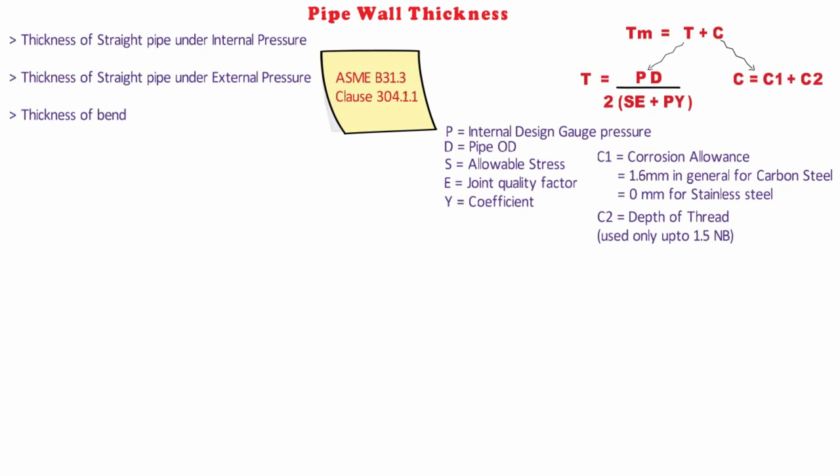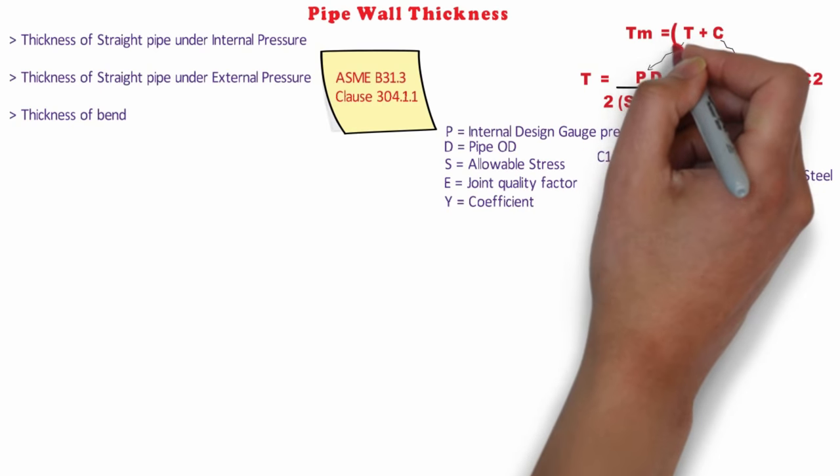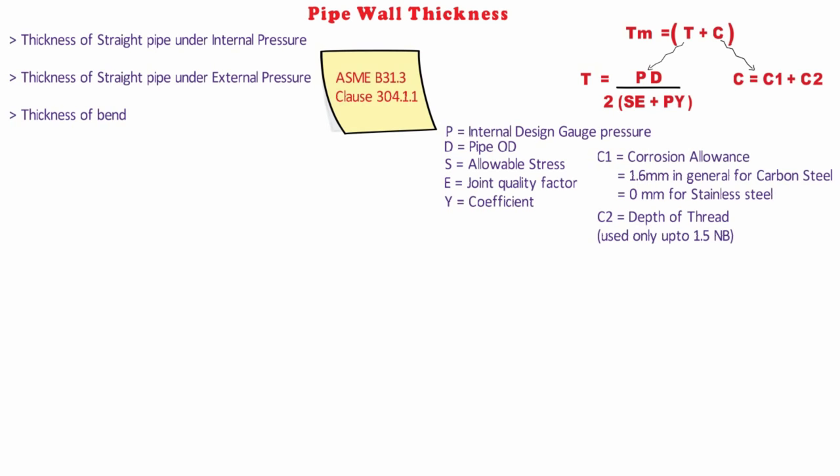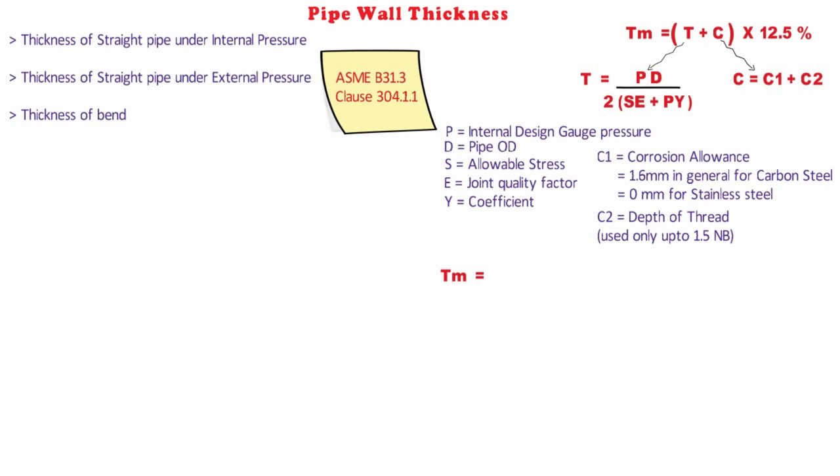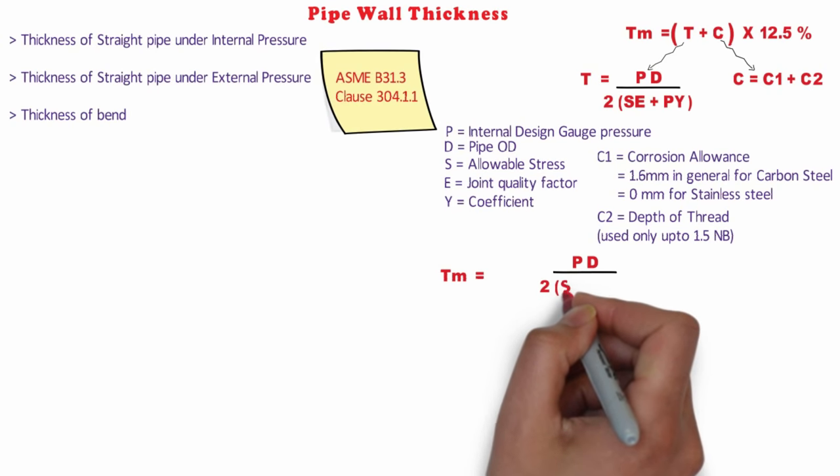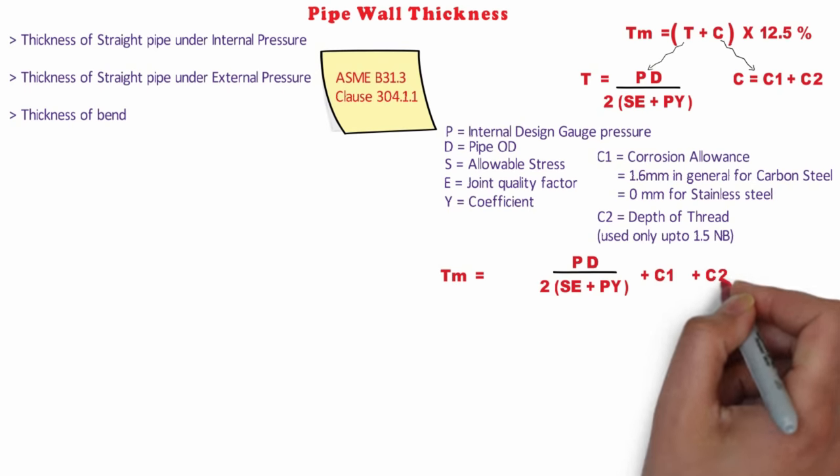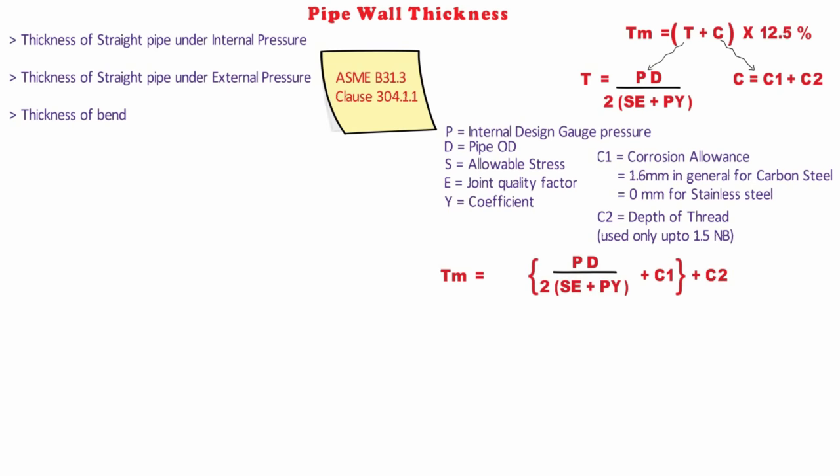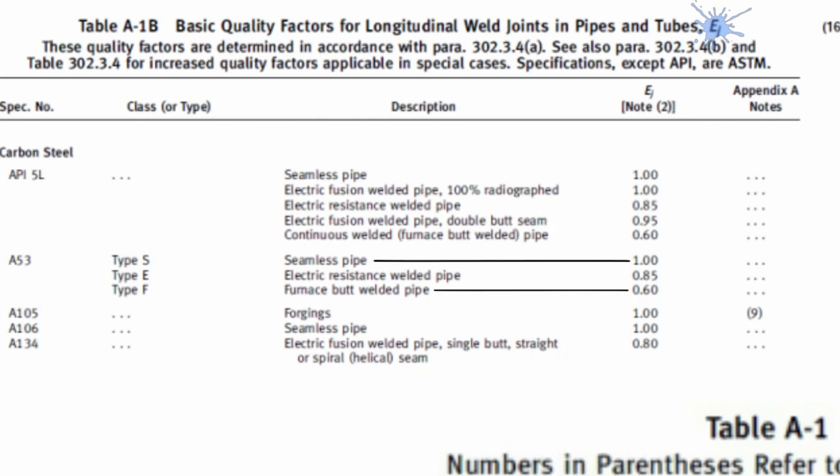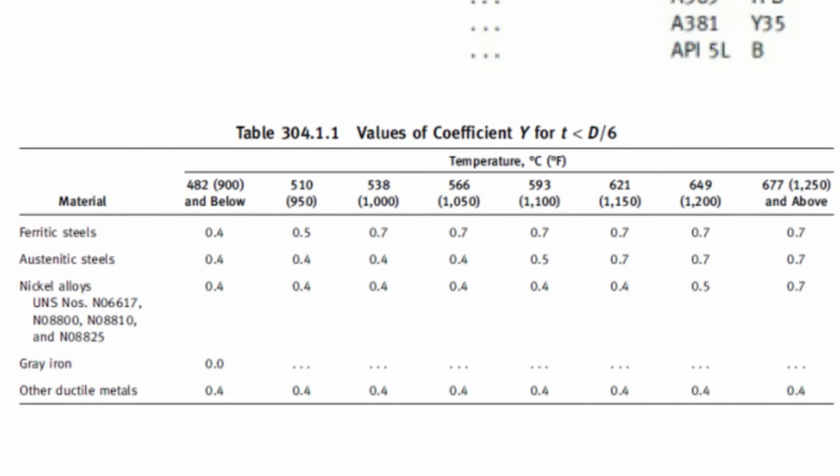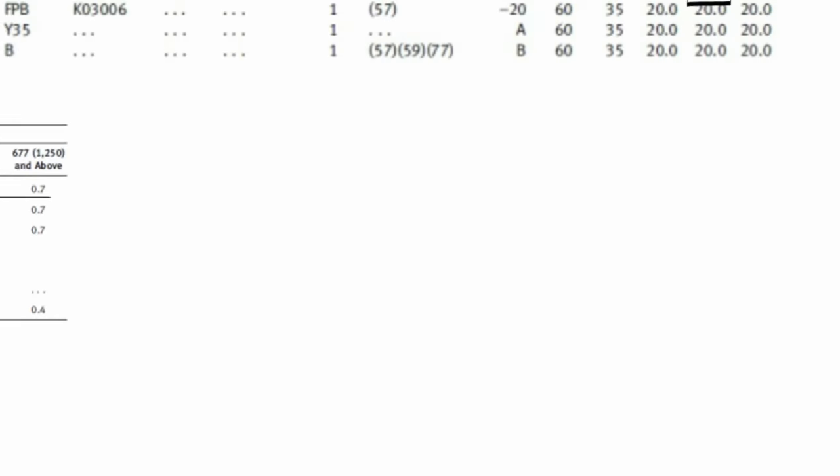The thickness calculated through the above formula has to be corrected to consider the mill tolerance of minus 12.5 percent. So our final formula becomes: tm = (PD / (2(SE + PY)) + c1 + c2) × 8/7. We can consider values of these terms like S, E, Y, and c1 from the attached tables or pictures as you can see on your screens, and the value of D (outside diameter) can also be found with a chart.